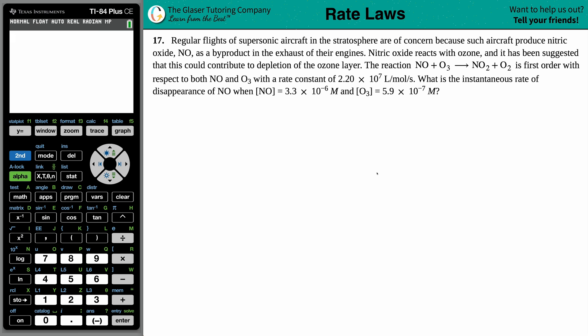Problem 17: Regular flights of supersonic aircraft in the stratosphere are of concern because such aircraft produce nitric oxide, NO2, as a byproduct in the exhaust of their engines. Nitric oxide reacts with ozone, and it has been suggested that this could contribute to depletion of the ozone layer. Oh no!